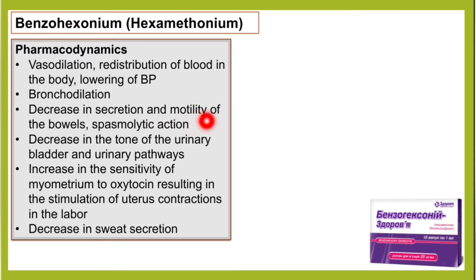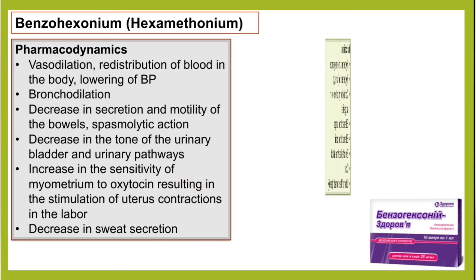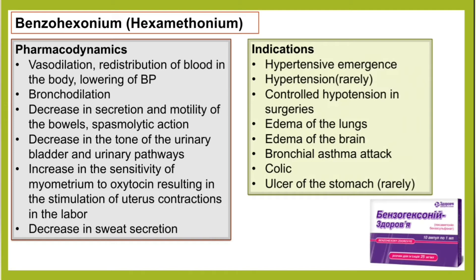It causes bronchodilation, decrease in secretion and motility of the bowels, and has a spasmolytic action. It decreases the tone of the urinary bladder and urinary pathways, increases the sensitivity of the myometrium to oxytocin resulting in stimulation of uterine contractions during labor, and decreases sweat secretion. Indications include hypertensive emergencies — though rarely used in hypertension — and controlled hypertension during surgery.